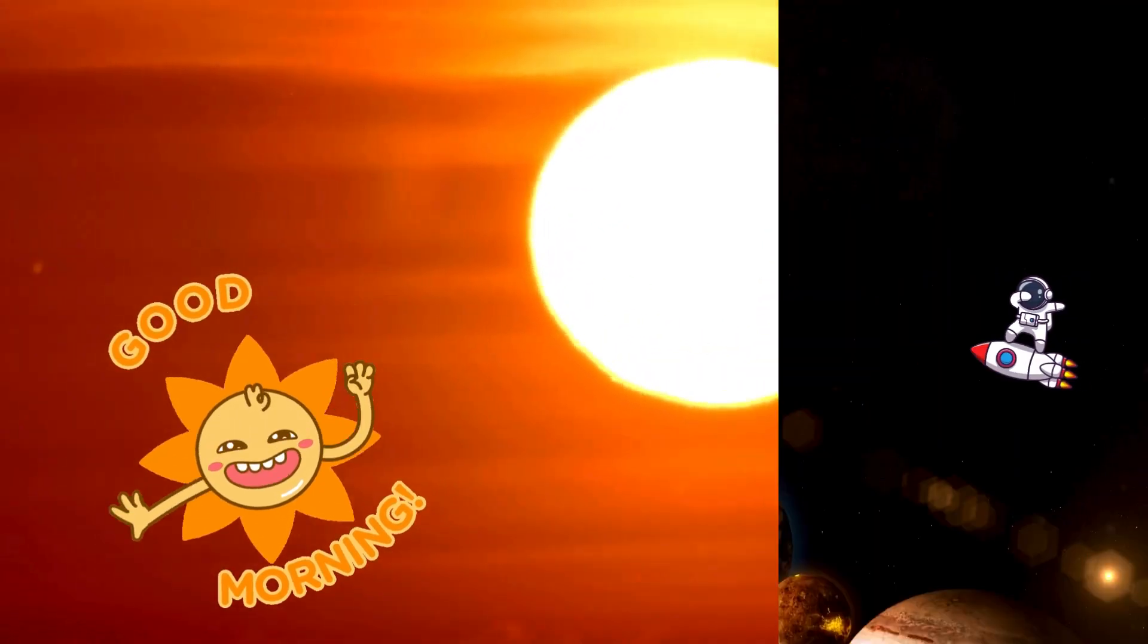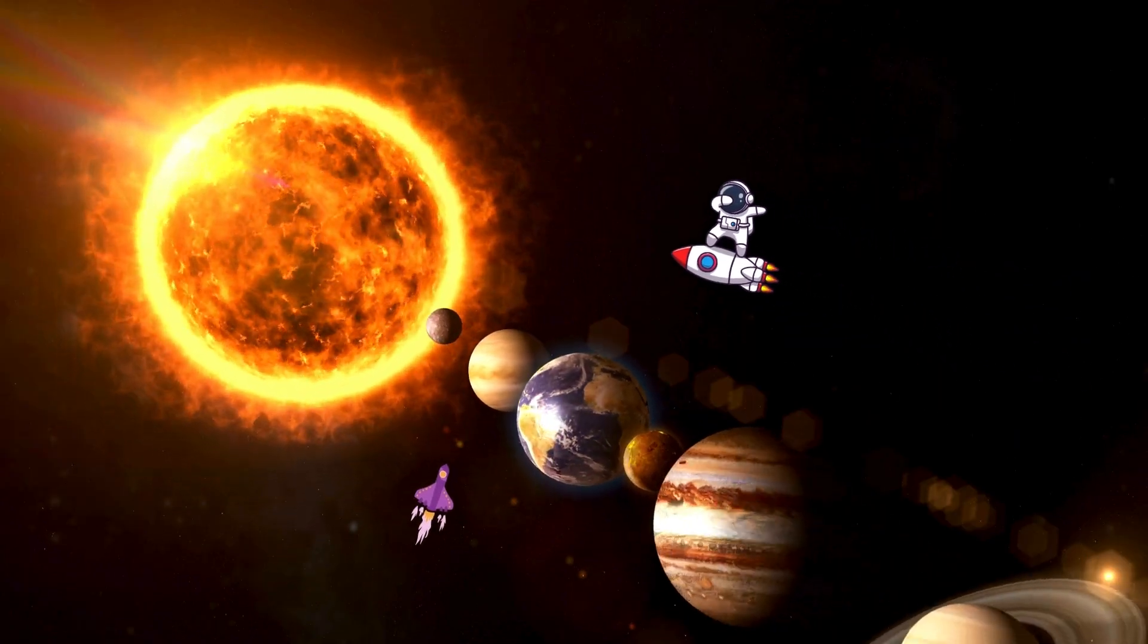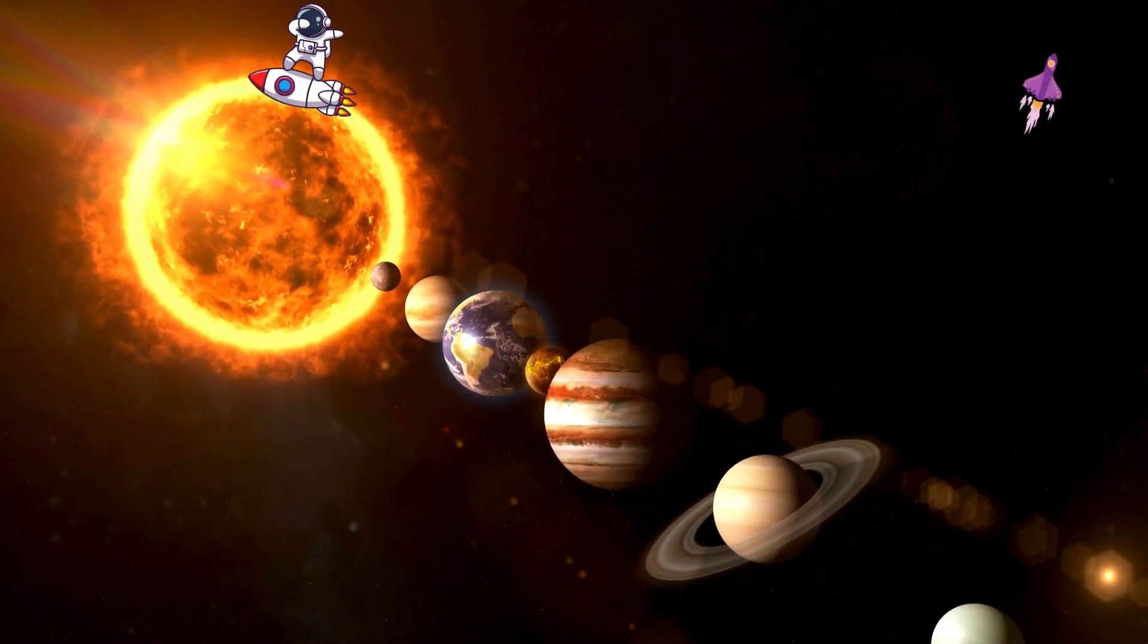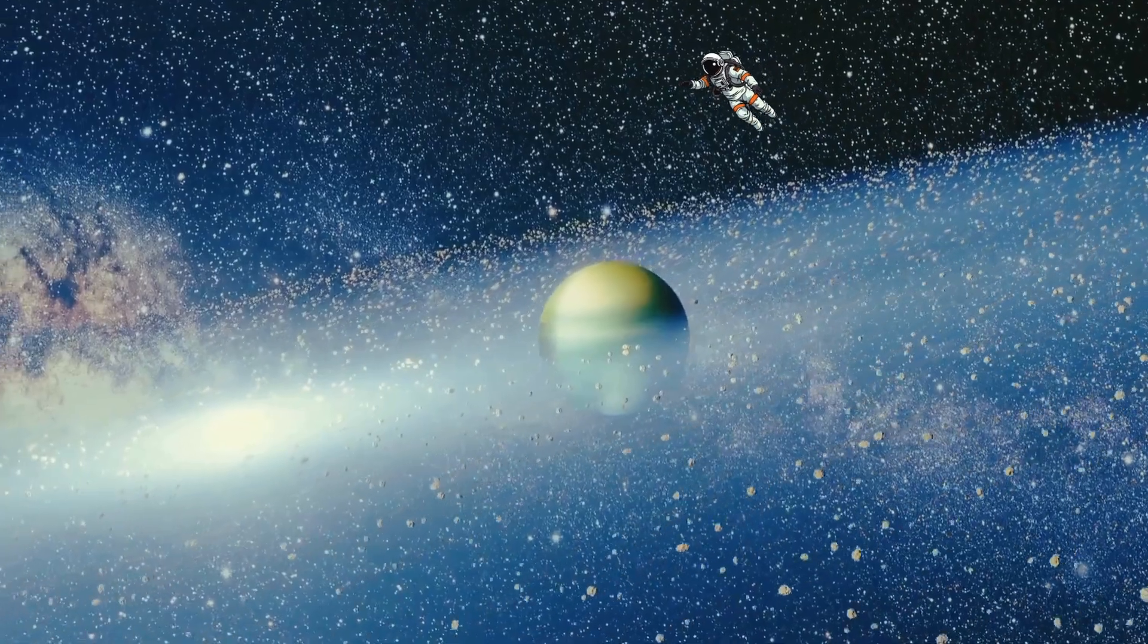The sun is bright, big and hot. Gives us light, like it or not. Planets dance around in space. Let's zoom off and find their place.